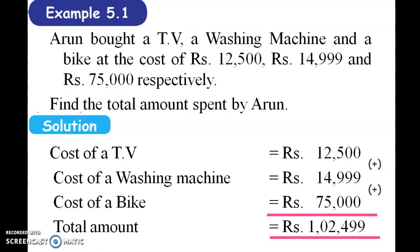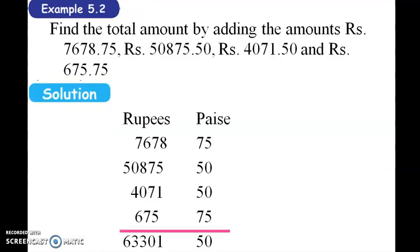The total amount is calculated by adding the prices of the TV, washing machine, and bike together. Adding the digits column by column gives the total amount spent by Arun.